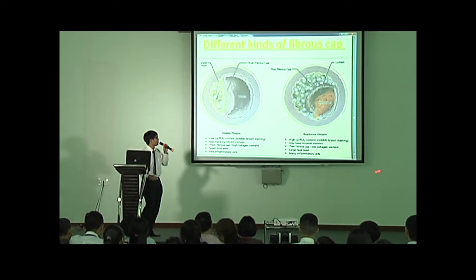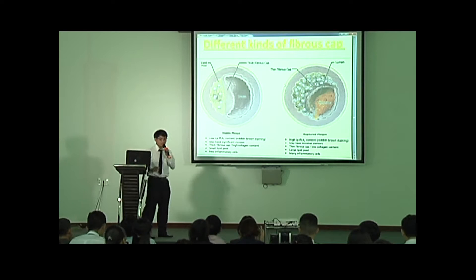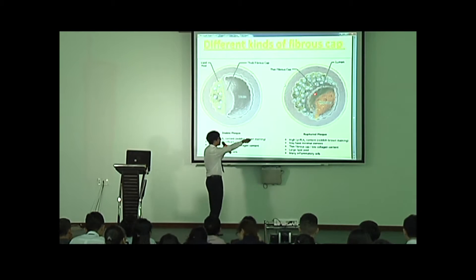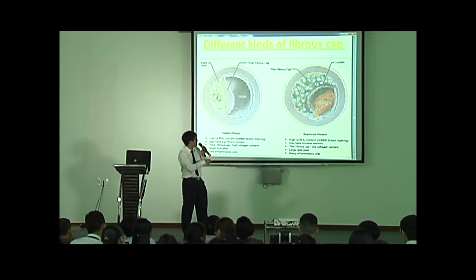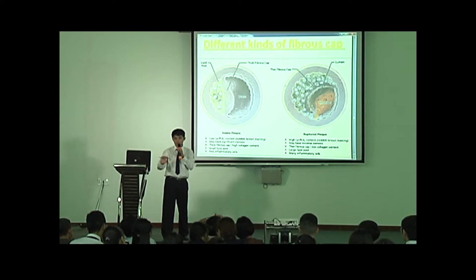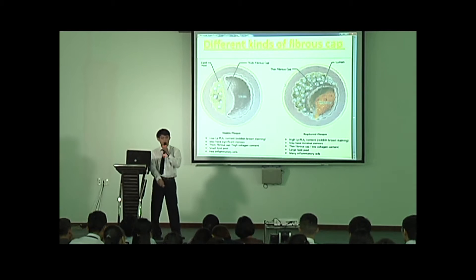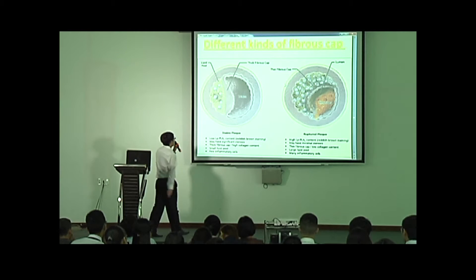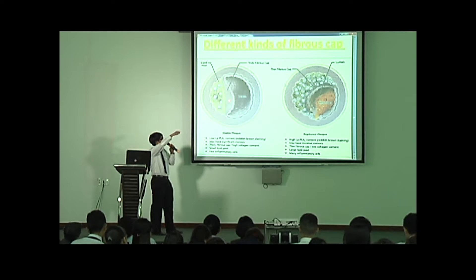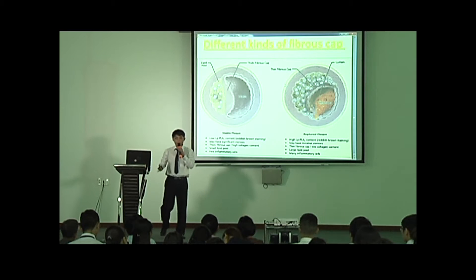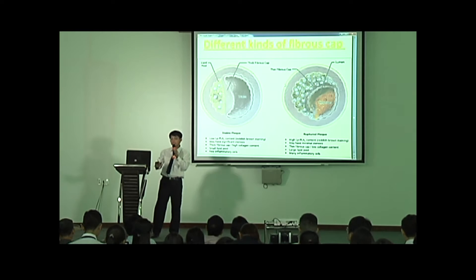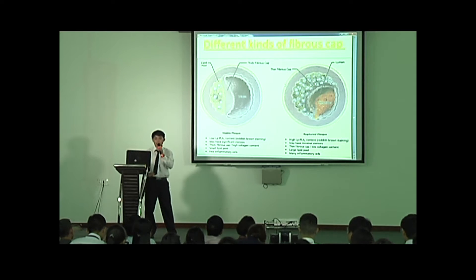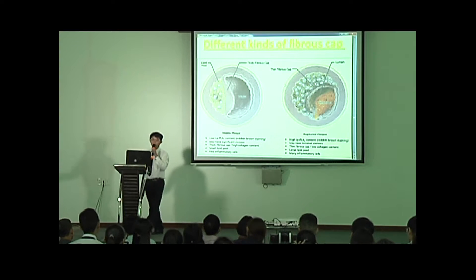Now let's talk about the different kinds of fibrous cap. We have two types: thin and thick. The difference is due to the concentration of collagen on the surface. The thin fibrous cap has a low concentration of collagen, making it very easy to rupture. Rupture can cause unstable angina, which we call acute myocardial infarction — very dangerous. The thick fibrous cap has a very high concentration of collagen secreted by smooth muscle cells, making it hard to rupture. But the plaque size increases chronically, and if stenosis exceeds 70%, we have stable angina.